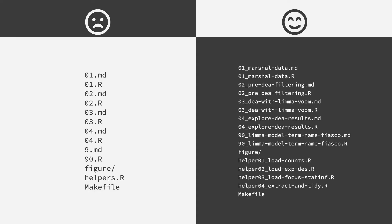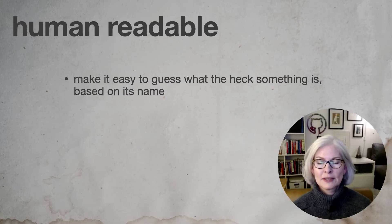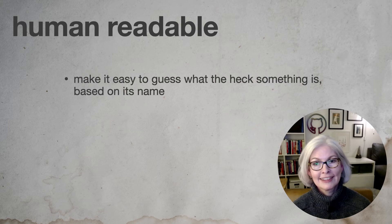Let's say you drop in on a project at 3 a.m. before a deadline. Which set of file names are you hoping to see? I think it's the ones on the right because they embrace the slug. We're going to borrow this term from the world of the web, which has the idea that a good URL indicates something about the page content. So human readable file names make it easy for humans to infer what the content or the purpose of a file is based on its name.